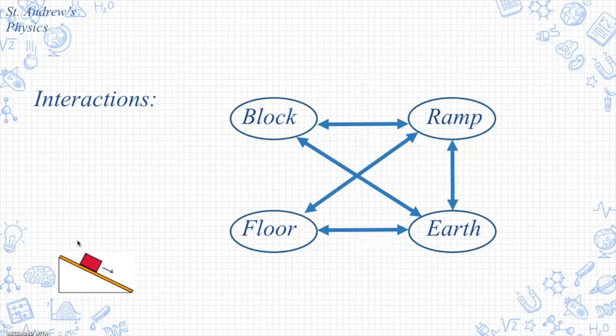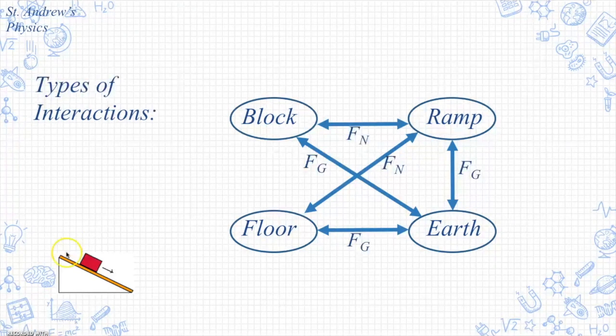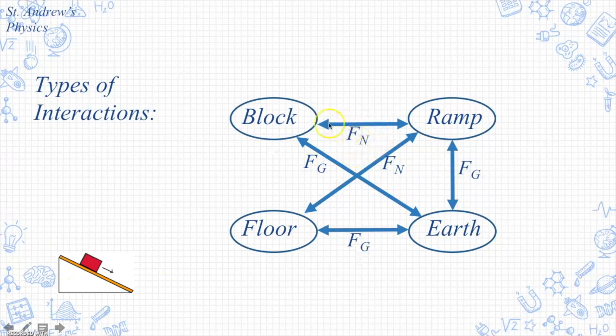Our next step is to go ahead and look at these interactions and give them a name. I went ahead and use some shortcuts here and named the normal force acting between the block and the ramp as F with a subscript N for normal. Likewise the floor and ramp are interacting with the same type of interaction. Earth is interacting as gravitational interaction.